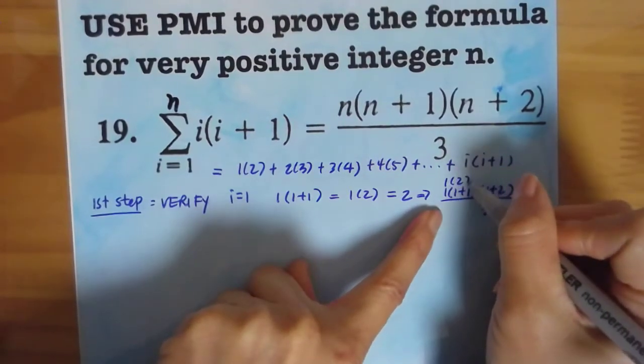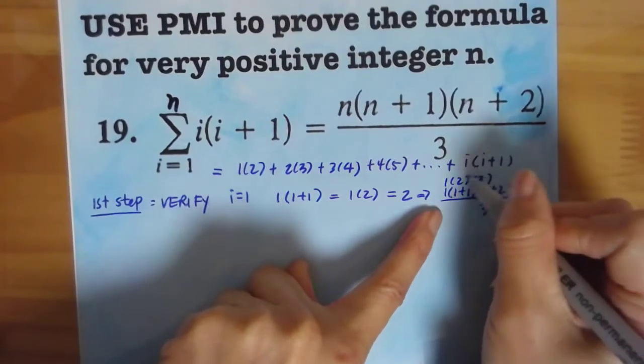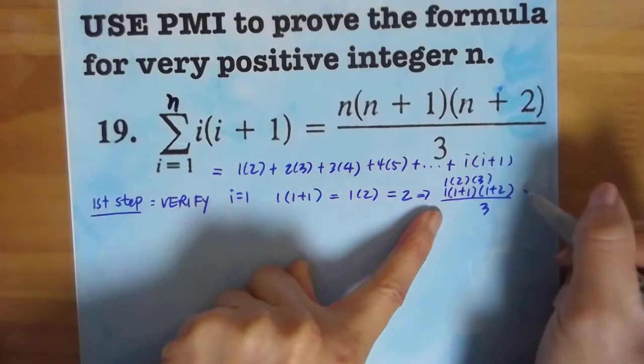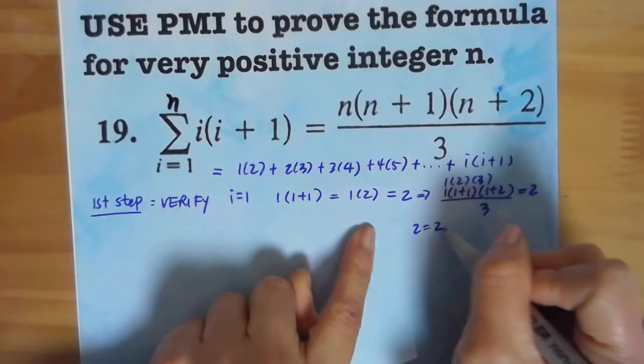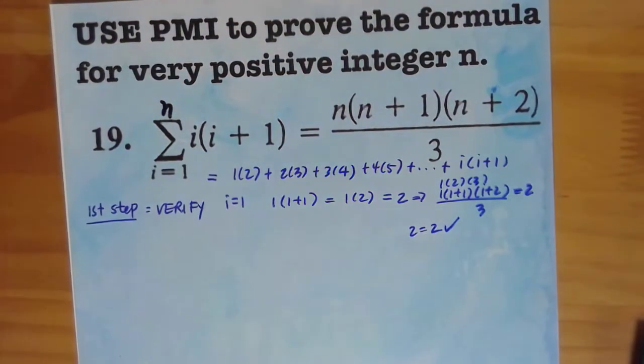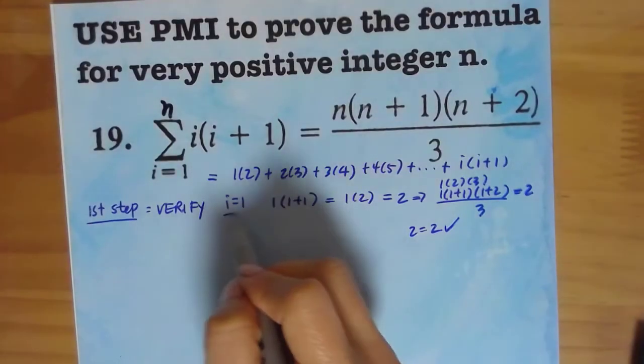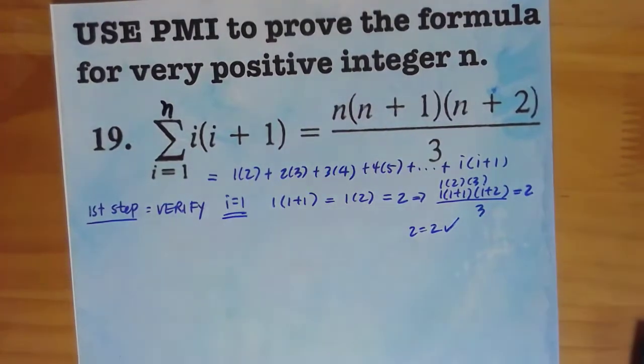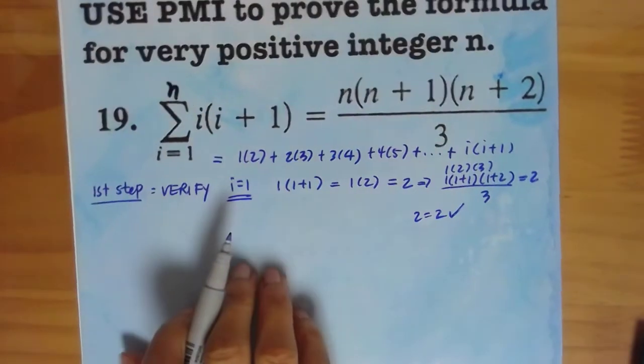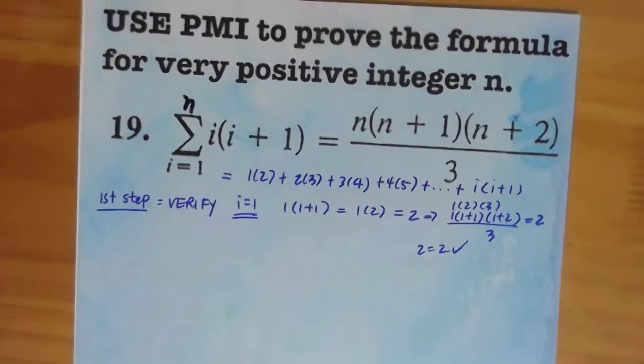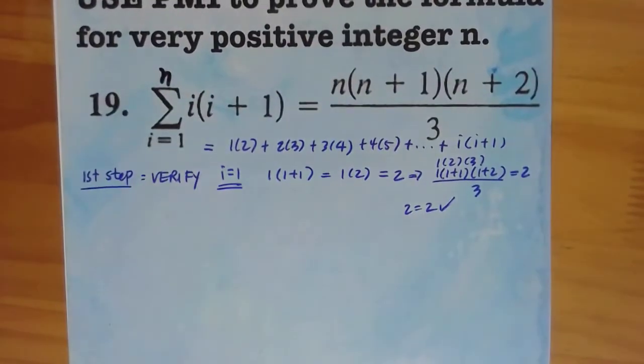This is 1 times 2 times 3, that's 6 divided by 3, which is 2. So 2 is equal to 2, so it's true. For this case I'm only going to show you i equals 1. It's only required that you only show 1. We just make you do more. So i equals 1 is true.